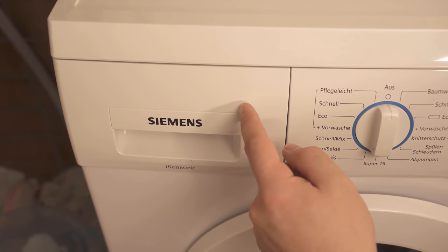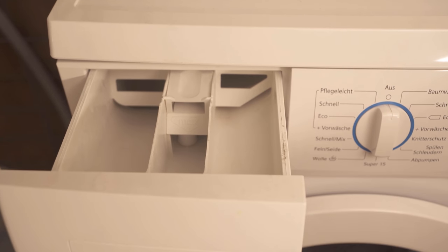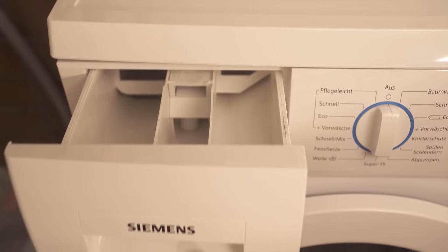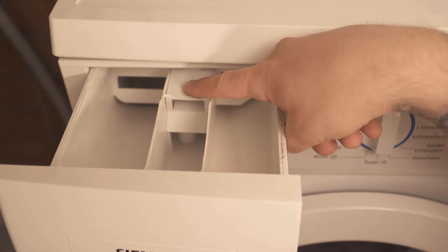In this video, I'll show you how to clean the drawer on your washing machine. Here you always put washing powder as well as fabric softener, and this of course ensures that the drawer gets pretty dirty at some point.